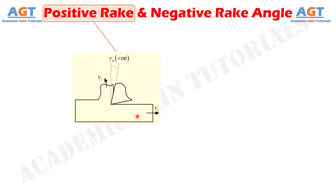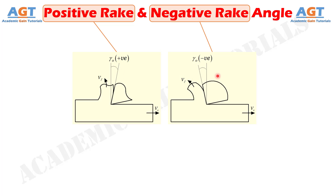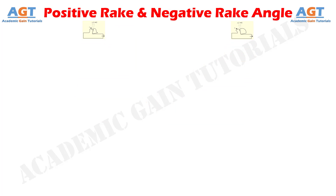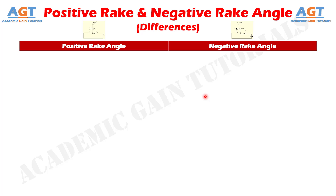A positive rake reduces the wedge angle, and thus shearing occurs smoothly with minimum shear deformation. Accordingly, cutting force and chip thickness ratio reduces. On the other hand, a negative rake offers a thicker tool tip, which increases both force resistant capability and life of the tool. So it is preferred while machining harder materials or machining with high chip load. Let's look into the basic differences between positive rake and negative rake in a tabular form.